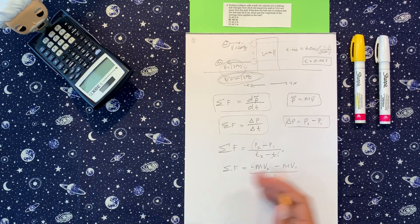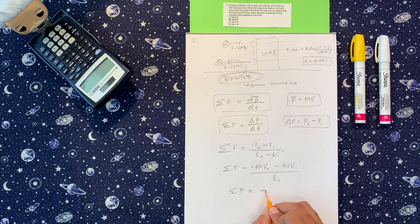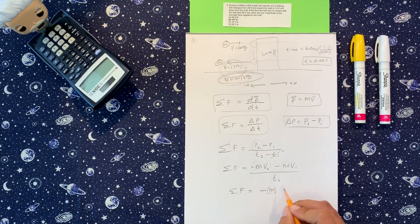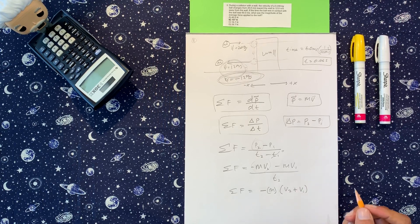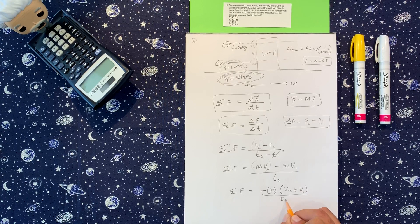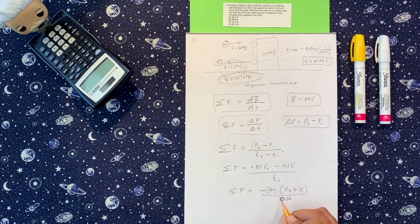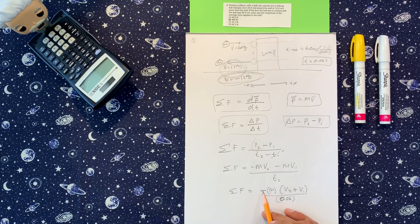Now they're both negative, right? Let's take the negative out, we take the mass out, and we're going to get negative m, and inside here we got v2 plus v1 over 0.06.